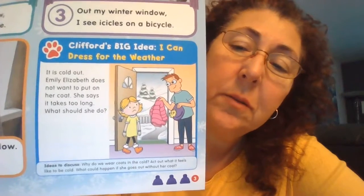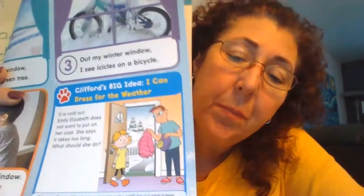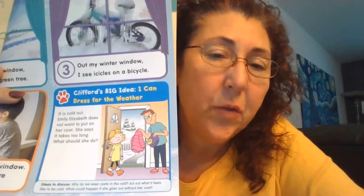Looks like she's frowning. It says it is cold out — Emily Elizabeth does not want to put on her coat. She says it takes too long. What should she do? Do you think it really takes that long to put on a coat? Maybe she could ask for help — ask her dad to help her, maybe she's not good at zipping yet. She could ask her dad to zip for her. Looks like she already has her boots on, so it wouldn't take too long to finish getting dressed.